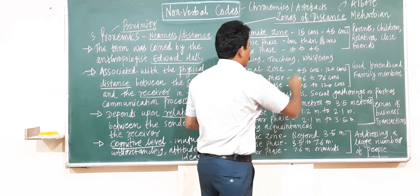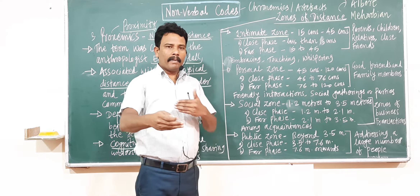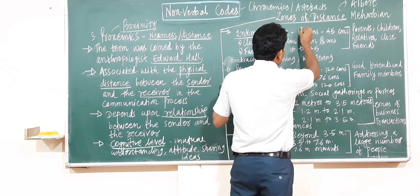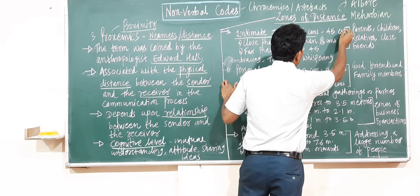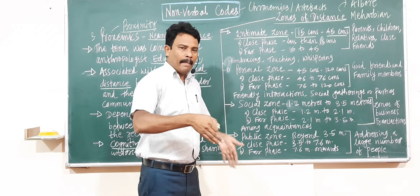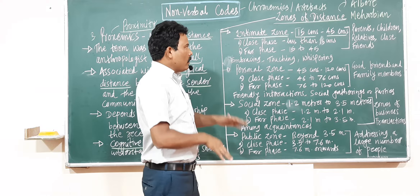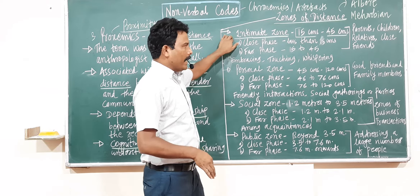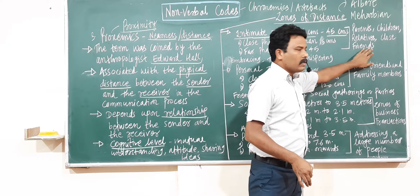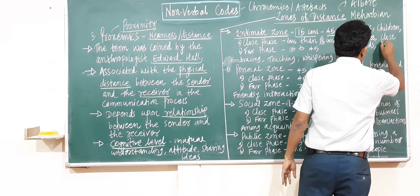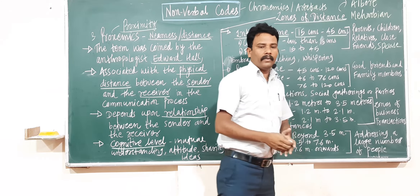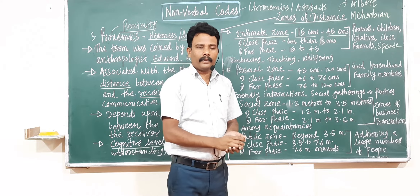The first zone is the intimate zone. Intimate means a close relationship. The distance given is 15 cm to 45 cm. Only intimate people — such as parents, children, relatives, close friends, and a spouse — can enter this zone. Others cannot.